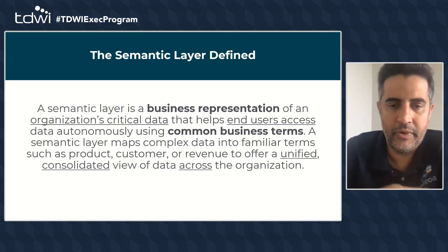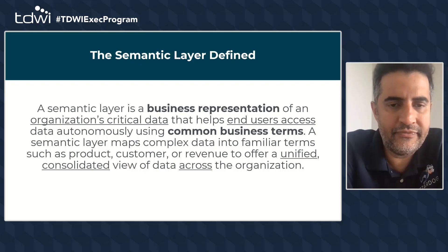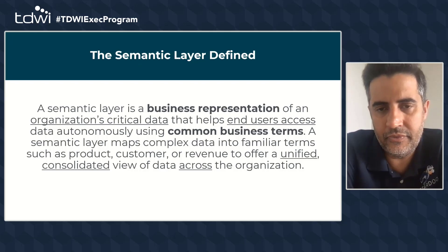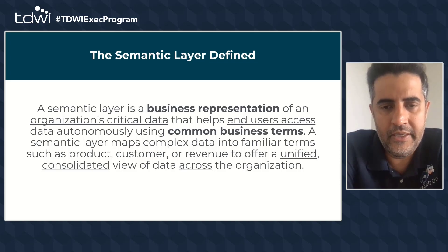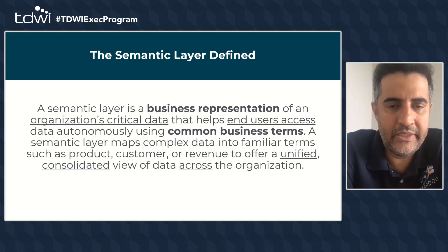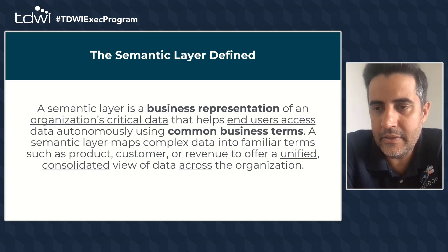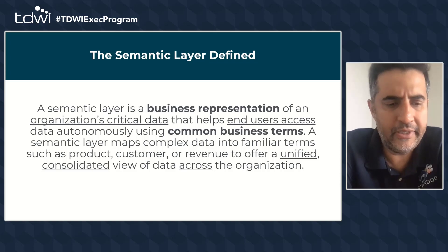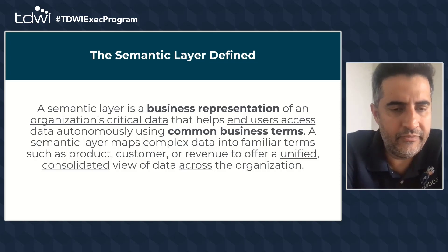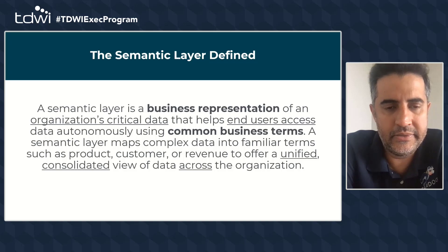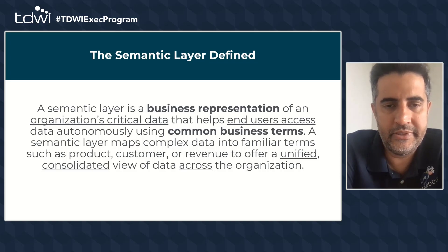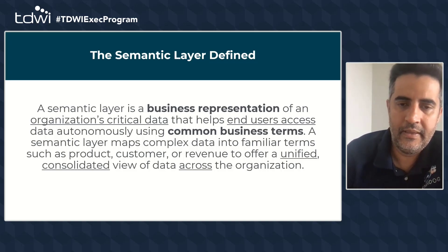The semantic layer is essentially a business representation of an organization's critical data, enabling end users to autonomously access information by attaching meaning to data elements. Rather than thinking about rows and columns or primary keys and foreign keys, we think about it in the context of what it means to us — products, customers, revenue — and being able to represent the relationships between those concepts. That is what a business representation means, and that's what a semantic layer enables.